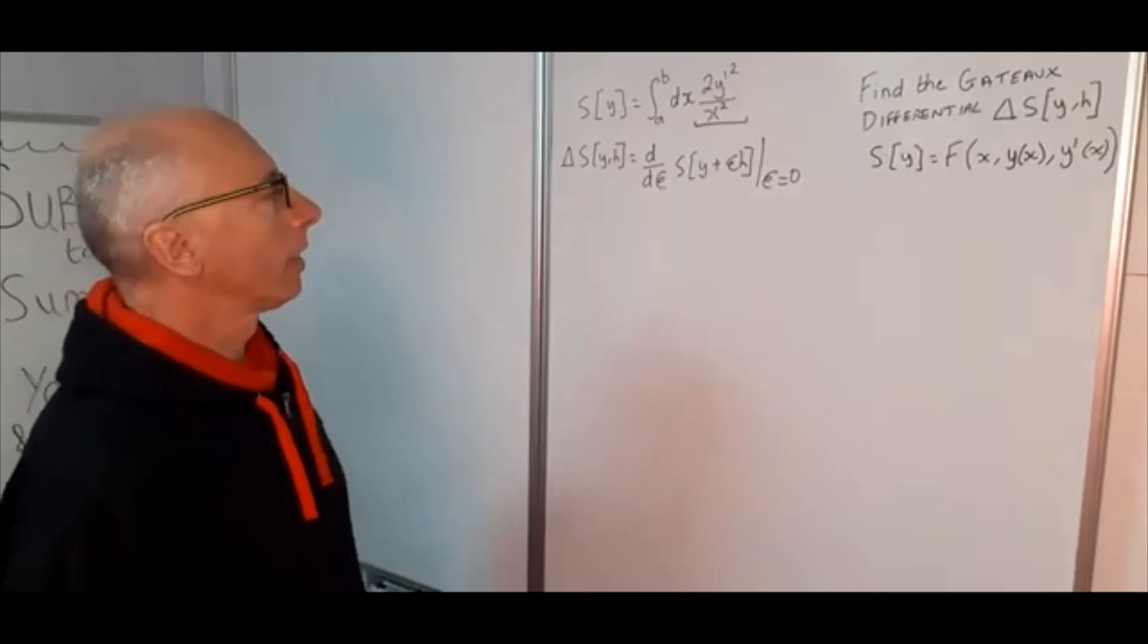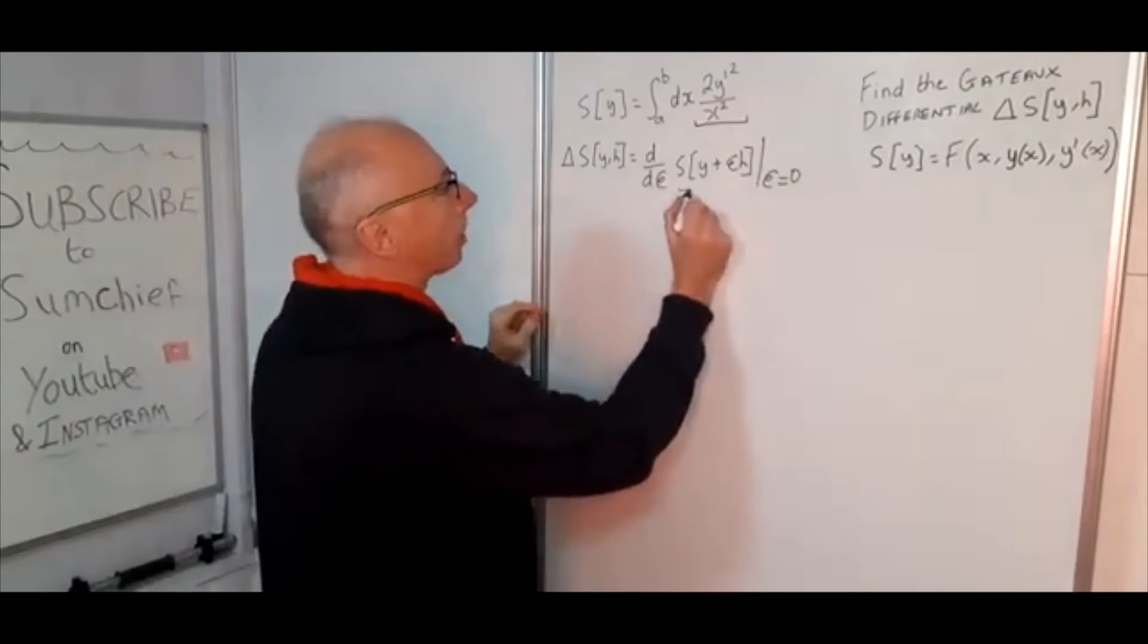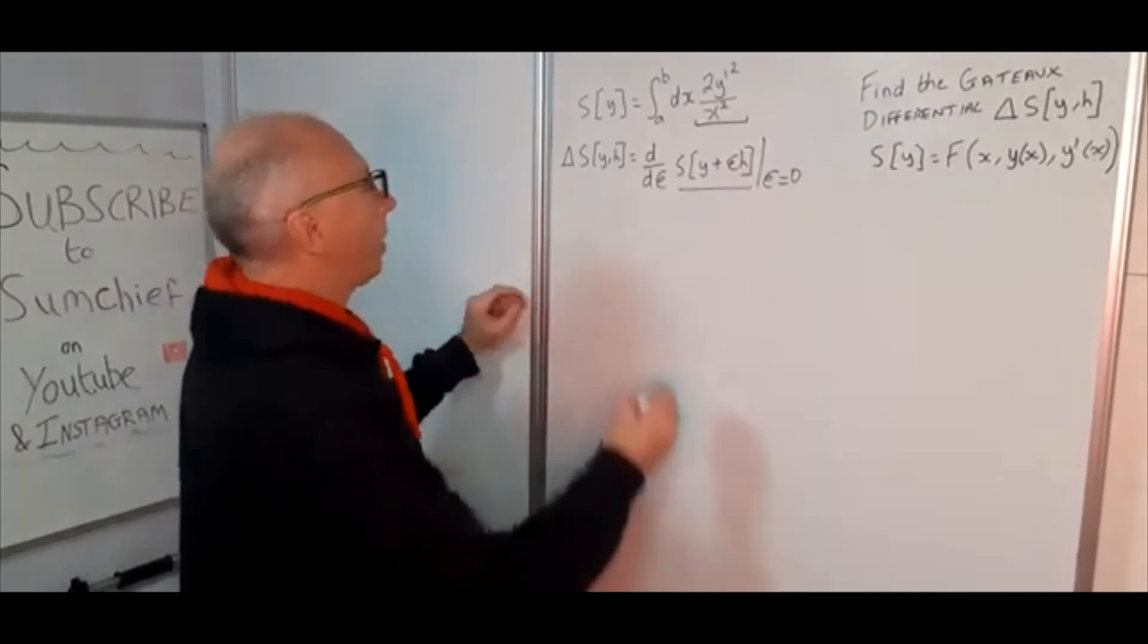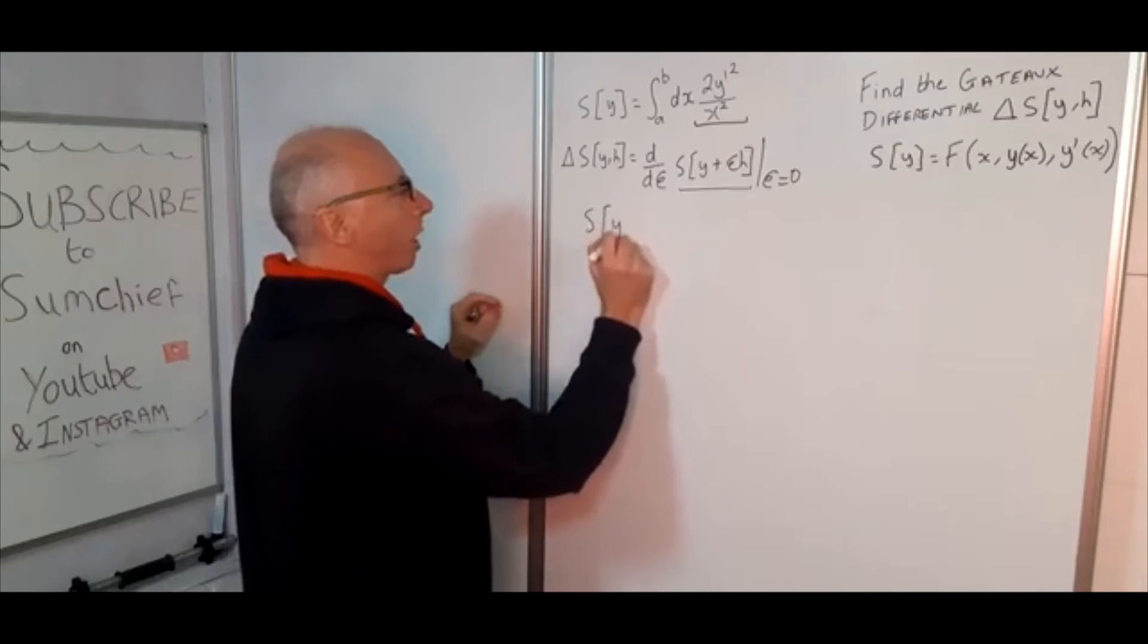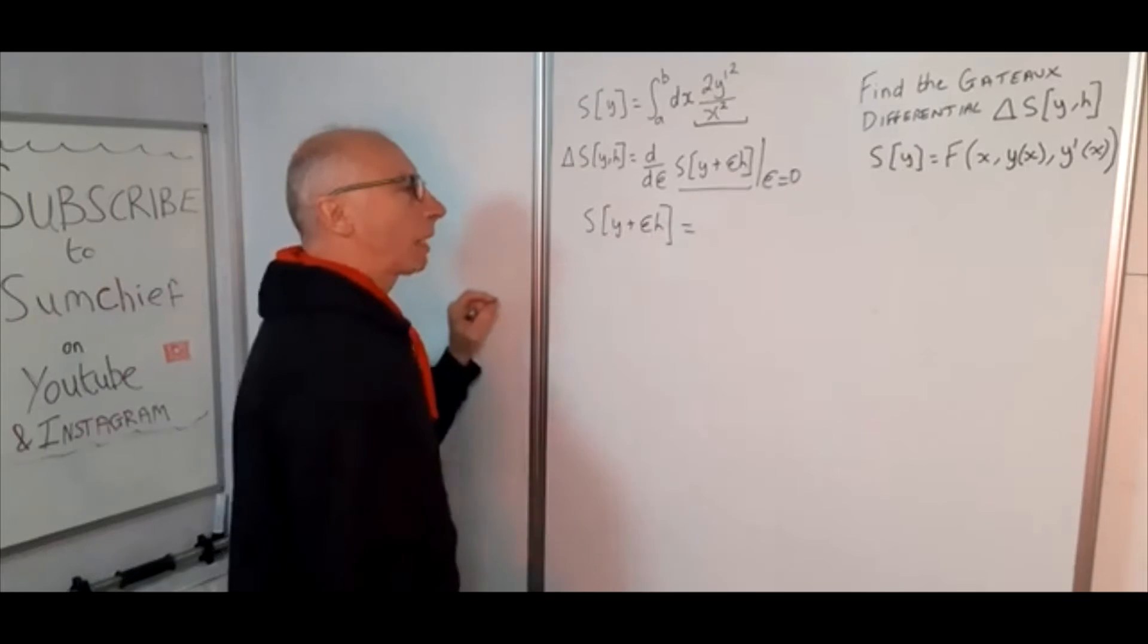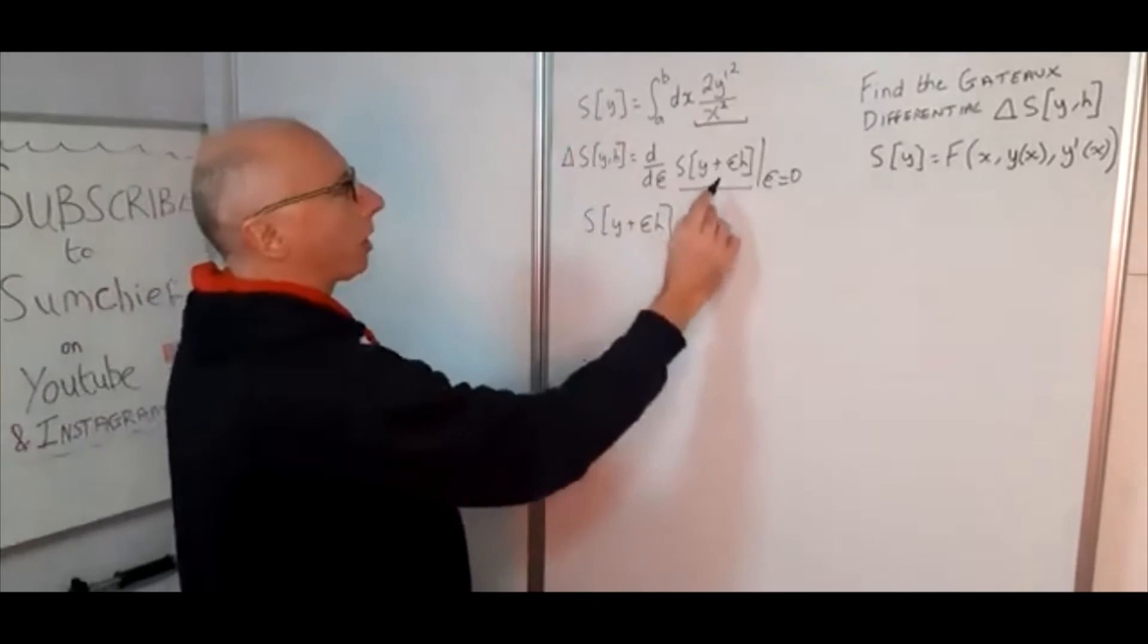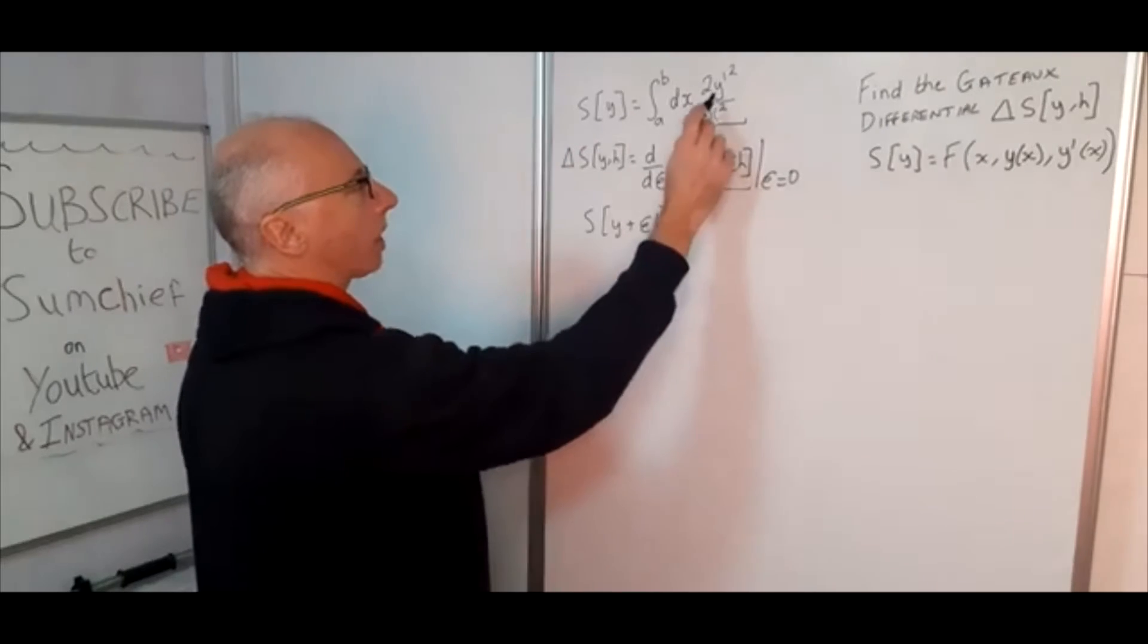So okay, first place to start is to achieve this part. So I want our functional here S of y plus epsilon h. Basically what that means is wherever we see a y we need to add epsilon h into the functional.